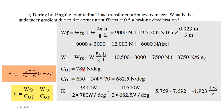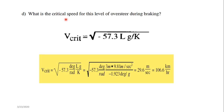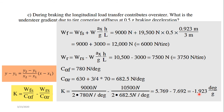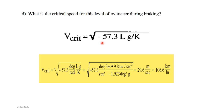For part four, the critical speed for oversteer is calculated using: V_critical = √(−57.3 × L × g / K). Since K is negative, the double negative gives a positive value under the root. With L = 3 m, g = 9.81 m/s², and K = −1.923 deg/g, the critical speed works out to 29.6 meters per second.